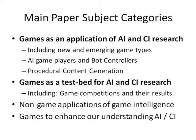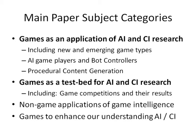The journal really includes any type of game. The main paper subject categories are games as an application of CI and AI research, and this includes new and emerging game types. Sometimes the research is used to actually invent new games. We also cover AI and CI to control in-game characters, and procedural content generation - one of the big bottlenecks in game production is authoring content, such as levels in first-person shooters, and you can use evolutionary computation methods to do some of this automatically.